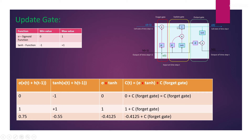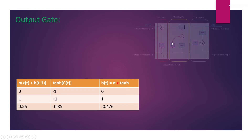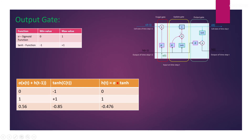In the output gate, we use the updated cell state to create our required output or hidden state for the current time step. So t-1 feeds into t. This is the mechanism of one LSTM cell.